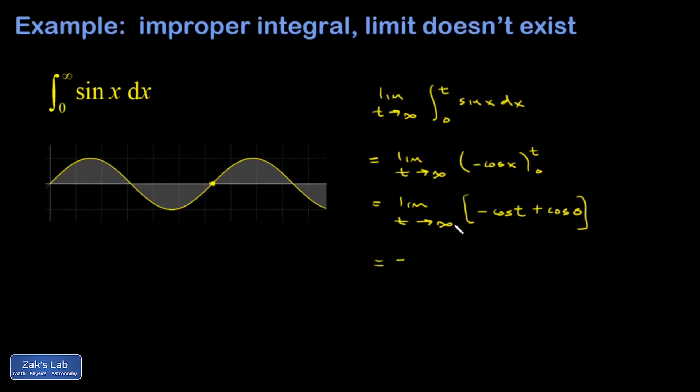Applying the limit to each of these terms, I have negative limit as t goes to infinity cosine of t plus a limit as t goes to infinity of cosine of zero, which is just one. And the limit of a constant is just that constant.